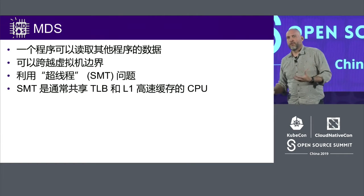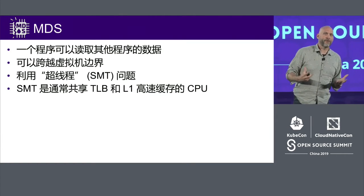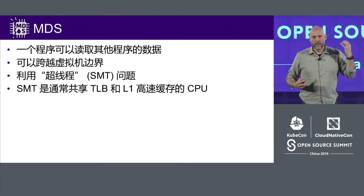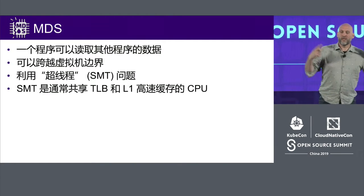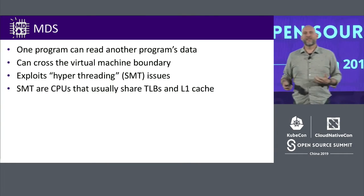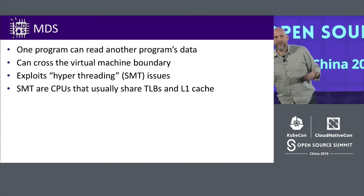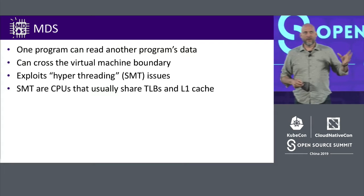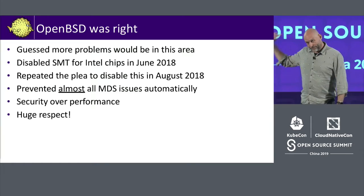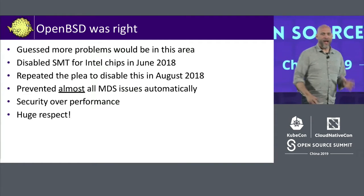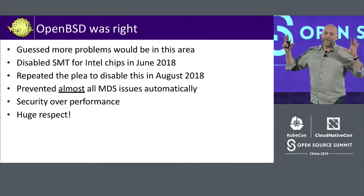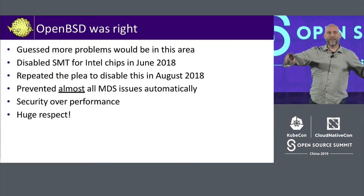All of these exploits leverage the fact that CPUs do something called hyperthreading, or SMT. This is how CPUs try to share resources — they share TLBs, which is the low-level way CPUs look up memory addresses, and they share the first-level CPU cache. By sharing those things, it turns out data can leak. We thought this might be an issue about a year ago when some information emerged, and it turns out OpenBSD was right. They said, over a year ago, disable hyperthreading.